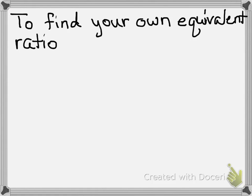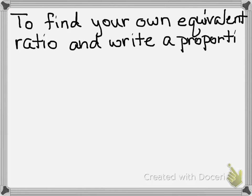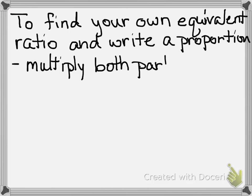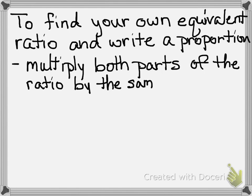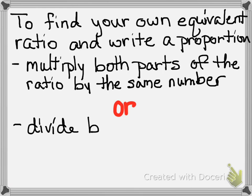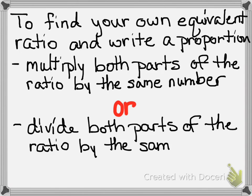What if we have to write our own equivalent fractions — write a proportion on our own? There are two options. First, you can multiply both parts of the ratio — the top and the bottom — by the same number. Or, second option, divide the top and bottom by the same number. If you multiply or divide top and bottom by the same number, you'll end up with an equivalent ratio and can write your proportion.